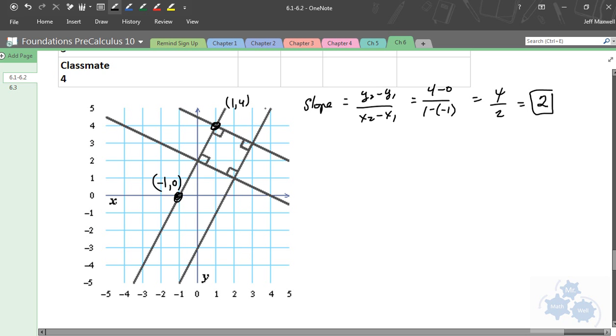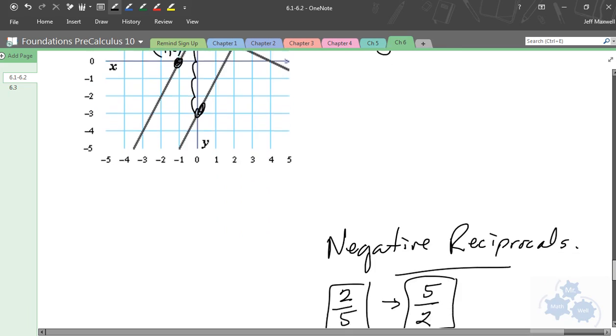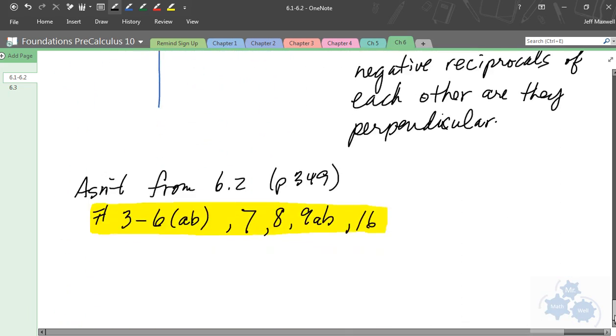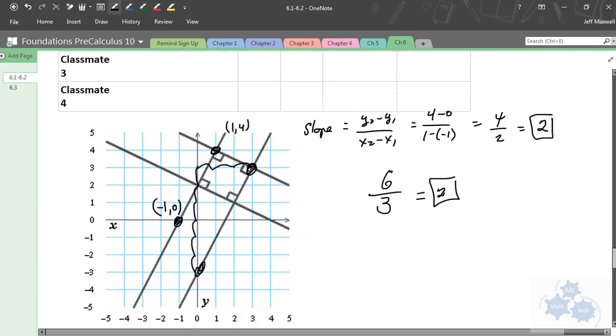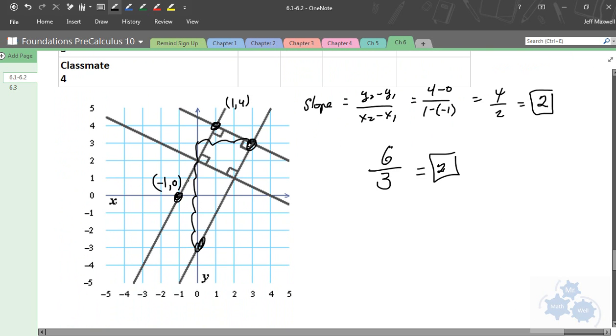Okay? You all should see that real quickly right away. And to find the slope of that line, the slope is y2 minus y1 over x2 minus x1. So in this case, it would be 4 minus 0 over 1 minus negative 1. So that's 4 over 2 or a slope of positive 2. Everyone see that? That's what you did yesterday.